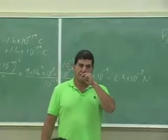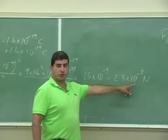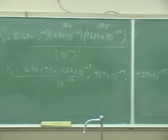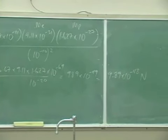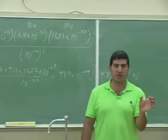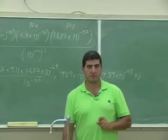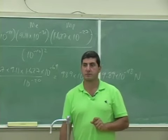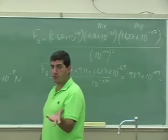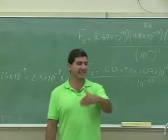So the electrical force between the electron and the proton is on the order of 10 to the minus 8, and the gravitational force is on the order of 10 to the minus 48. So if I were to ask you why the electron goes around the proton — is it due to gravity or the electrical force? It's due to the electrical force. Is there a gravitational force between them? Yes, there is, but it's very insignificant.